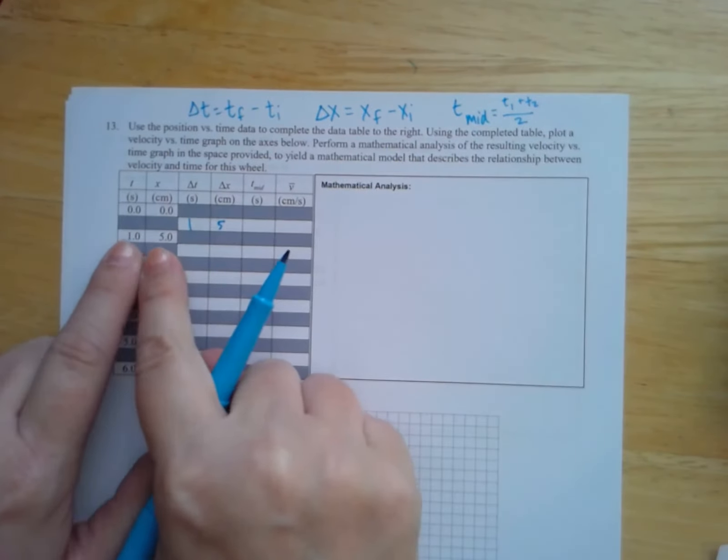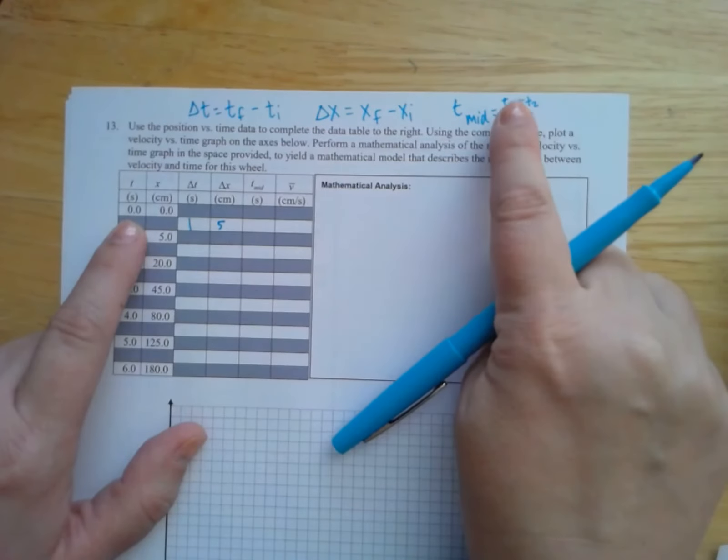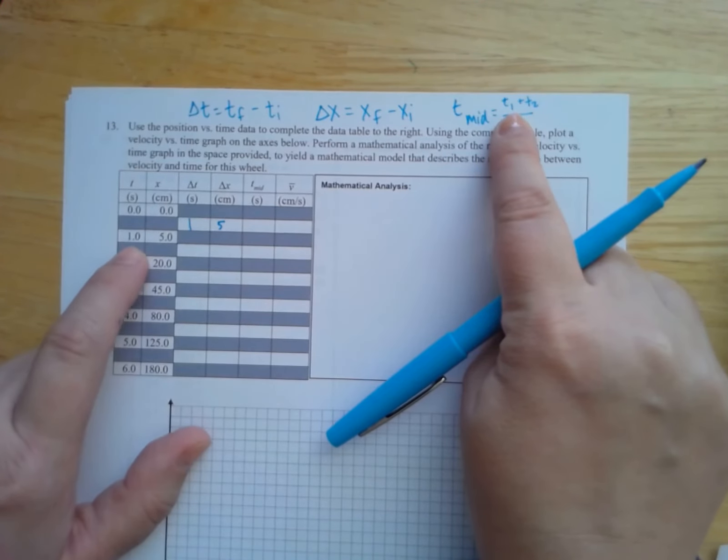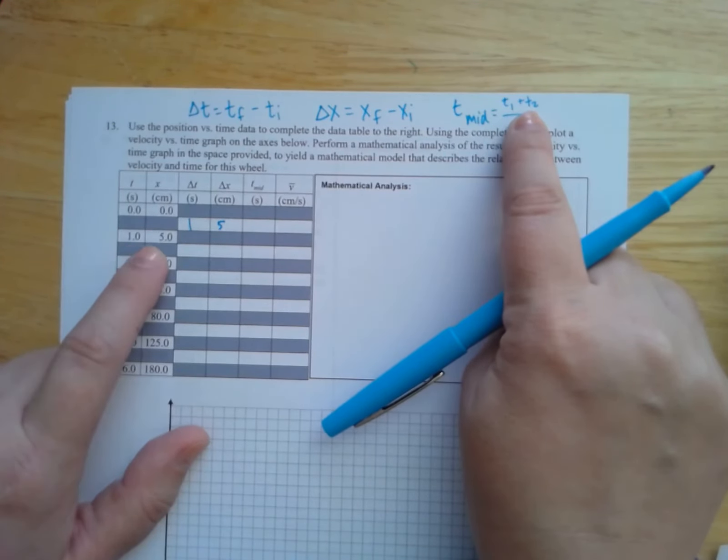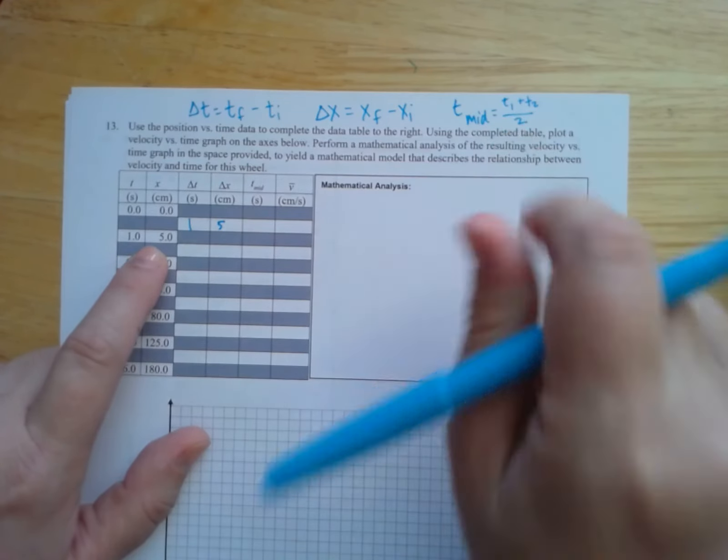So if I did that for these two data points, my two T's are going to be zero and one. So I would add those together and get one divided by two is going to be 0.5.